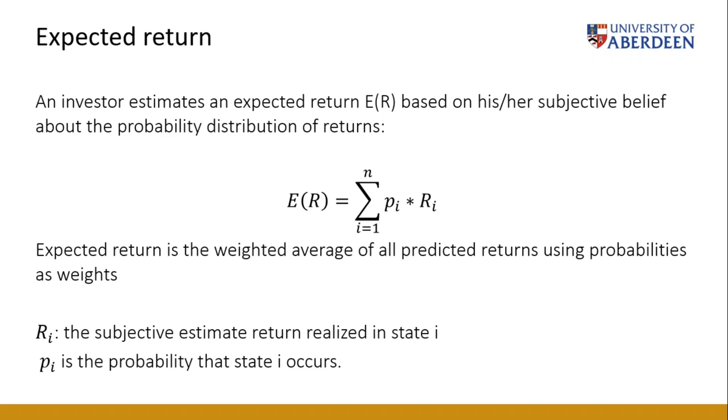Expected return is denoted by E(R), which is the weighted average of all possible returns, RI, on the risky stock with probabilities of each return used as the weight. So I denote the weight as PI and the predicted return as RI. RI represents the return realized from risky common stock in a predicted scenario I, and PI represents the probability that the predicted scenario I comes true. So in portfolio analysis, expected return is one of the important inputs alongside variance and covariance, which will be introduced later on.